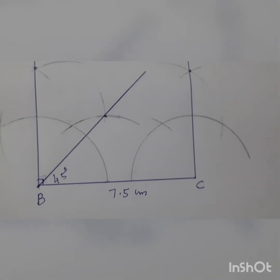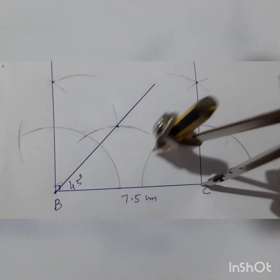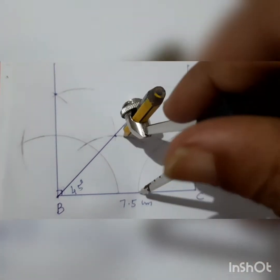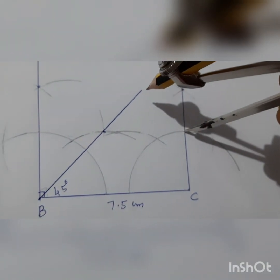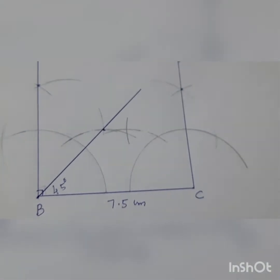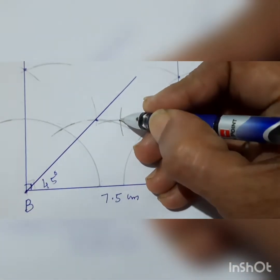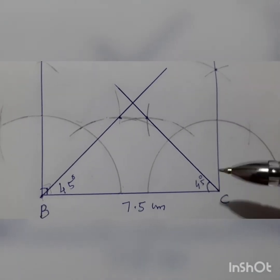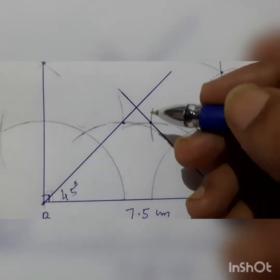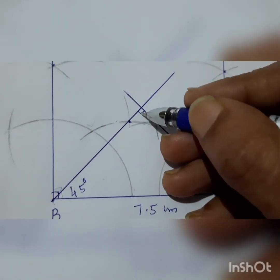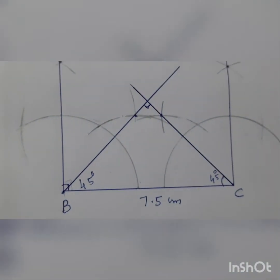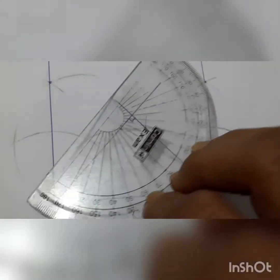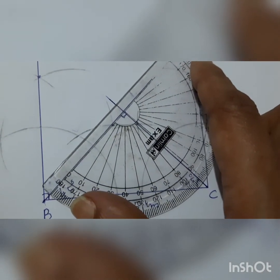Now I have to bisect the 90 degree angle. How to bisect: I place two arcs like this, then point here and make an arc, then point here and make another arc. Then joining this point, I will have one 45 degree here and 45 degree here. We can also verify using a protractor — this is 90 degrees on the opposite vertex.